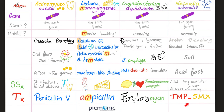As for Actinomyces israelii — gram-positive rods, non-spore-forming, anaerobic, and still branching. It is part of the normal oral flora. In cases of oral trauma, it can cause facial abscess with yellow sulfur granules. It can also affect the genitourinary organs, causing genitourinary infections with yellow sulfur granules. The treatment is good old penicillin.